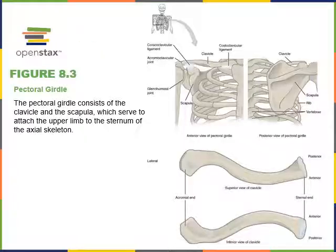The pectoral girdle are the bones of the shoulder — the clavicle and scapula — that attach the upper limb to the axial skeleton. The clavicle, or collarbone, is a medium-sized flat bone on the anterior of the shoulder. The sternal or medial end of the clavicle articulates with the manubrium, forming the sternoclavicular joint, the only joint between the axial and appendicular skeleton in the upper extremity.